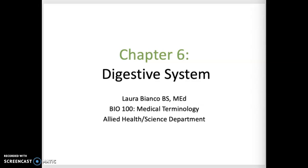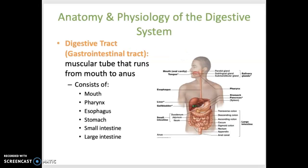The digestive system is covered in chapter 6 of your textbook. We'll start with just an overview of the digestive system including the digestive tract. The entire system consists of the digestive tract as well as some accessory organs that help with food breakdown and nutrient absorption.